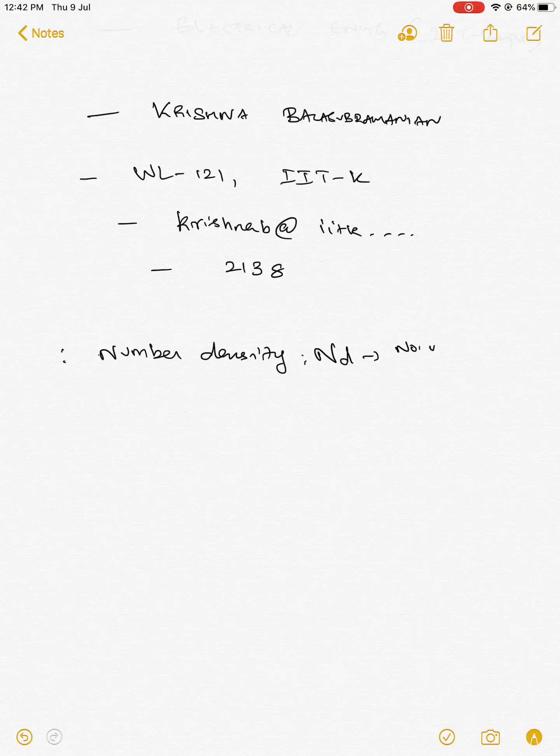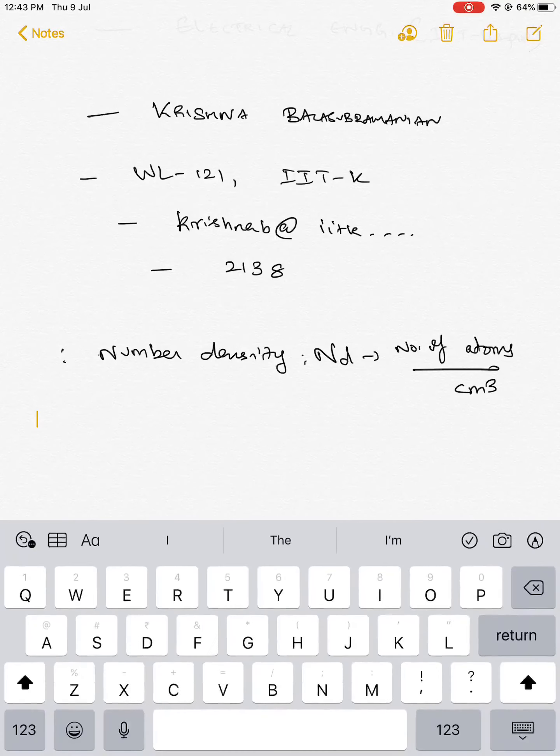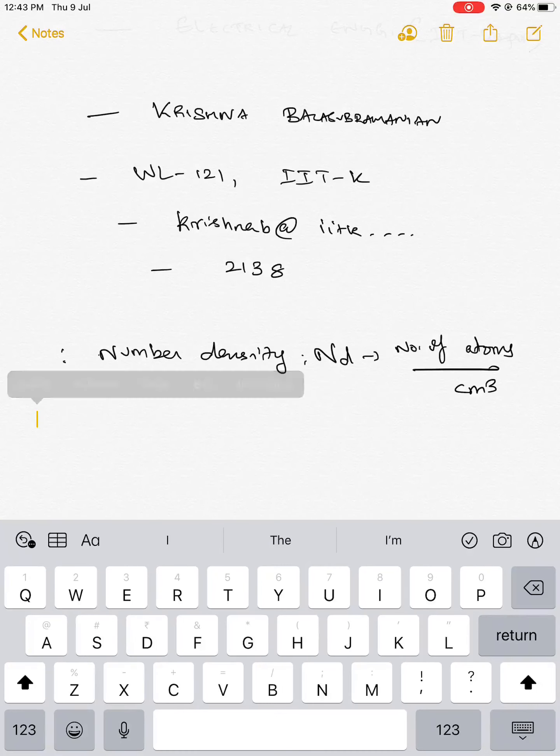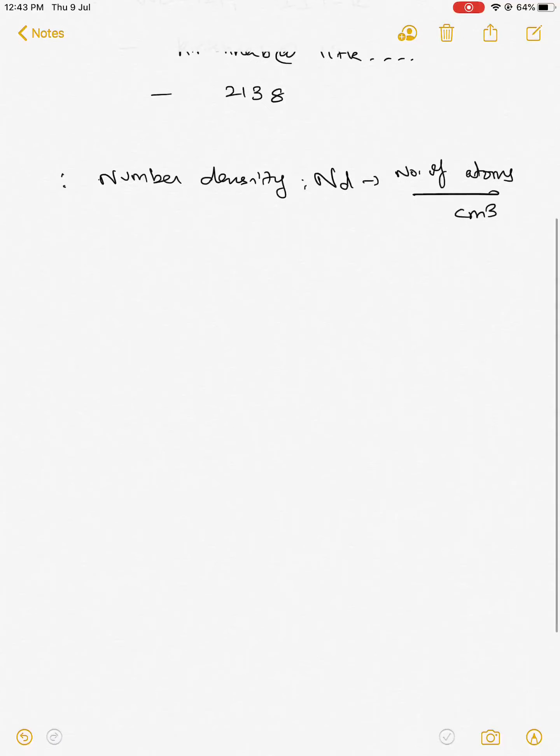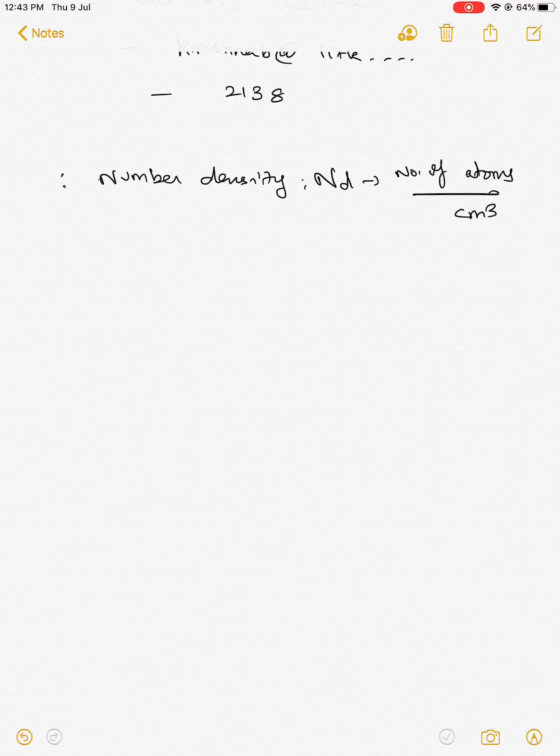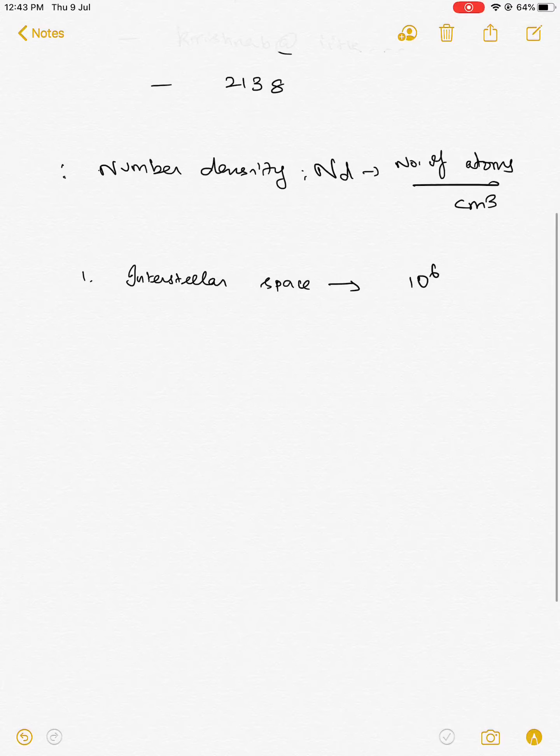Let us call it Nd, it is just number of atoms per centimeter cube. Now, if we try to organize the things that we know in terms of this particular number, the first thing, the most rarest being the interstellar space. Can we guess what would be the number density? It is about 10 power 6 atoms per centimeter cube.